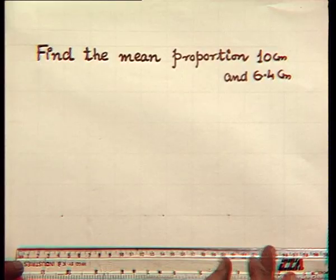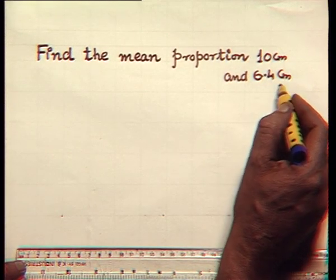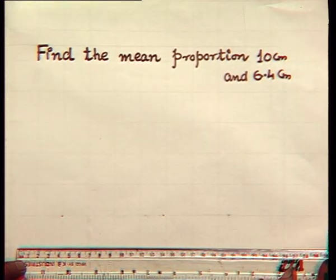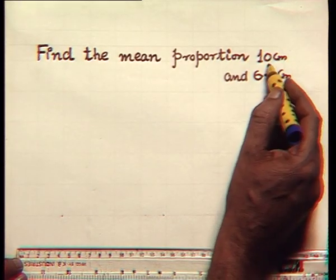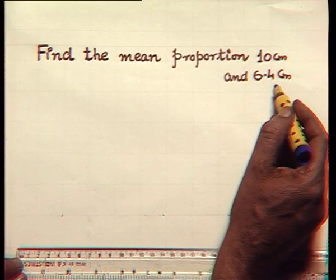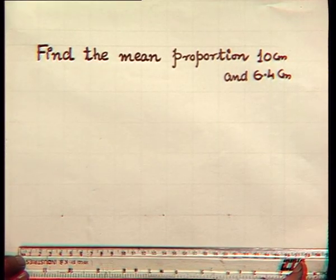Now, besides triangles and quadrilaterals, it is possible for us to construct a polygon similar to the given polygon — that you can try yourself. Now we take up another case where we will be finding the mean proportional between two given numbers. The problem is: find a mean proportion between 10 centimeters and 6.4 centimeters. First, we shall draw a line which is equal to the sum of these two lengths, that is 10 plus 6.4 centimeters, which will be 16.4 centimeters.